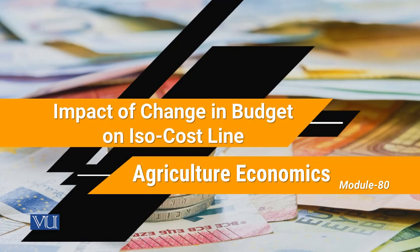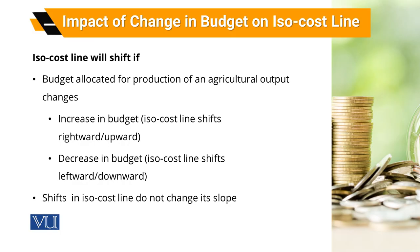Module 80: Impact of change in budget on ISO cost line. ISO cost line basically is a curve that reports different combinations of two inputs that a farmer can purchase by using an allocated amount of resources.